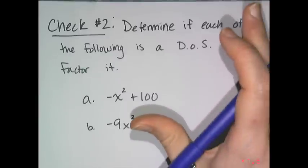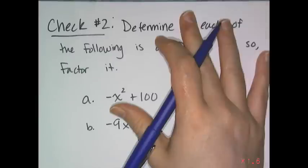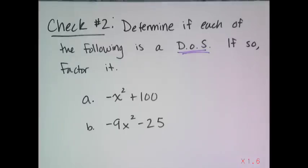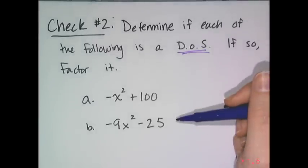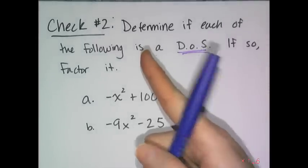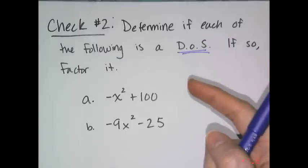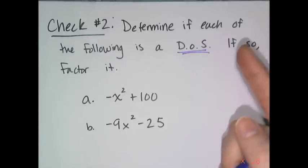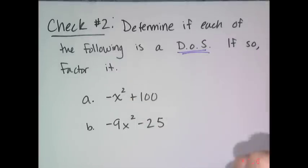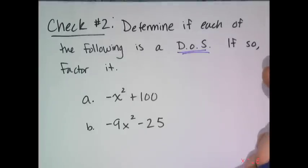Finally, for the last check, we're going to focus on the difference of squares. I've given you two binomials. First determine if each is a difference of squares, and if it is, factor it. If it's not, say that it's prime over the reals or integers.